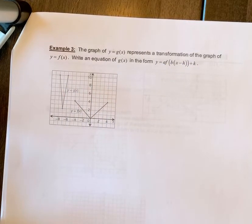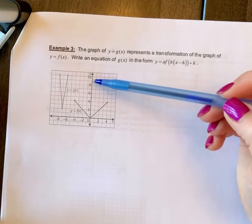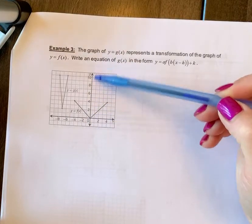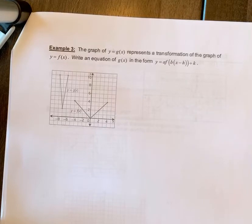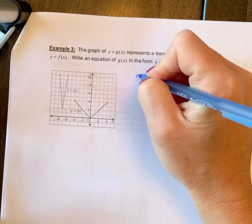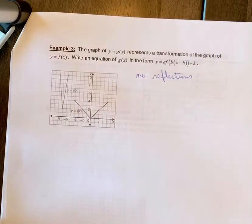So the first thing is I analyze the orientation to see if there's any reflections. It still opens up, so there's no reflections. Technically, you could say that it reflected over the y-axis, but then it would be the same shape. So we would never put a reflection in there that didn't change the shape. So there are no reflections.